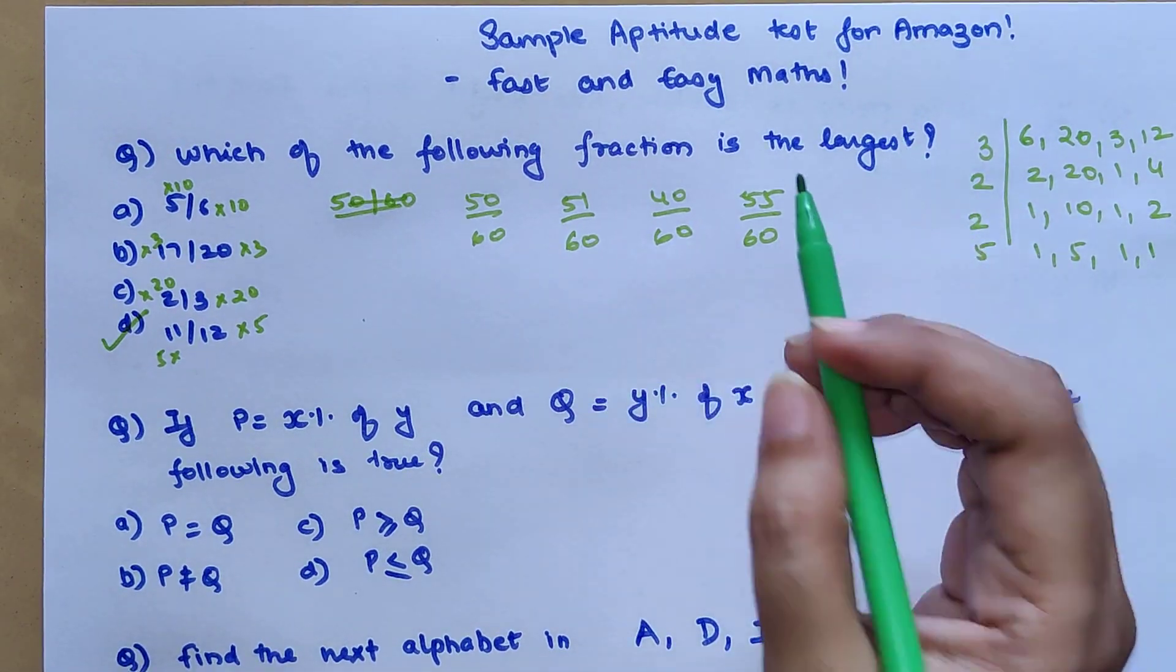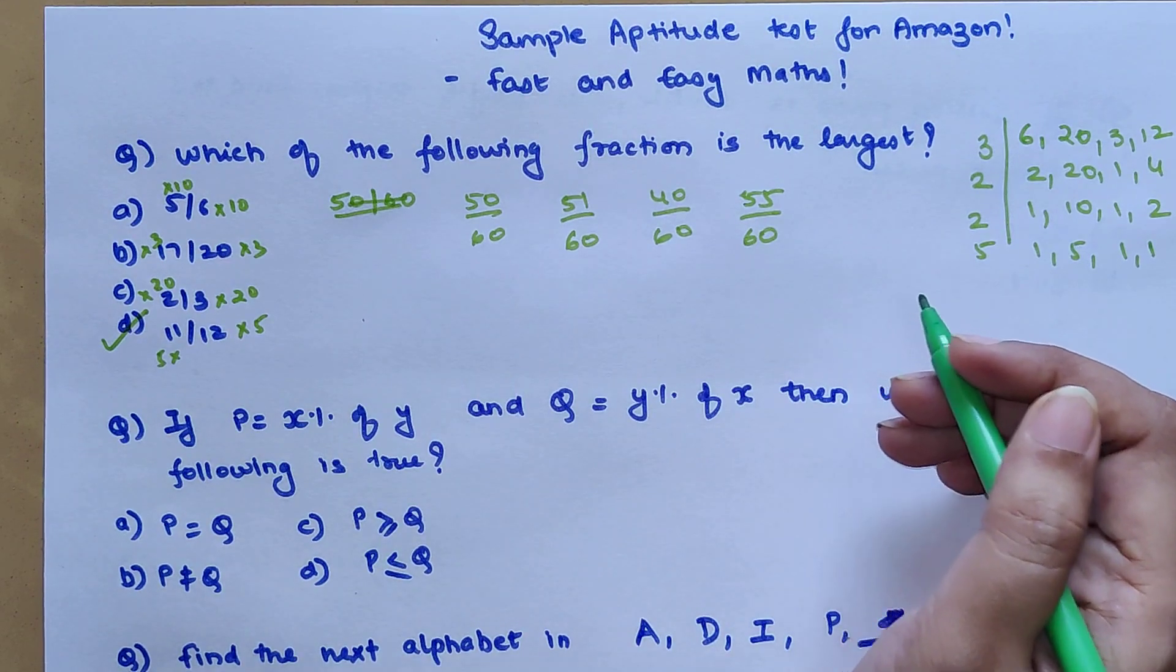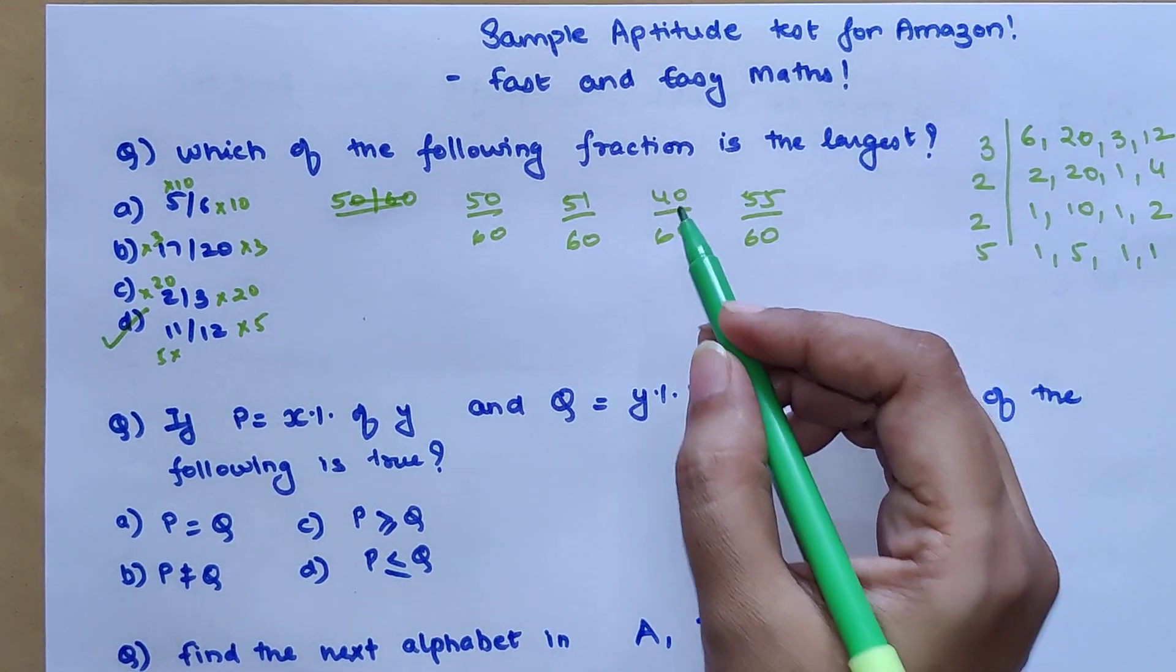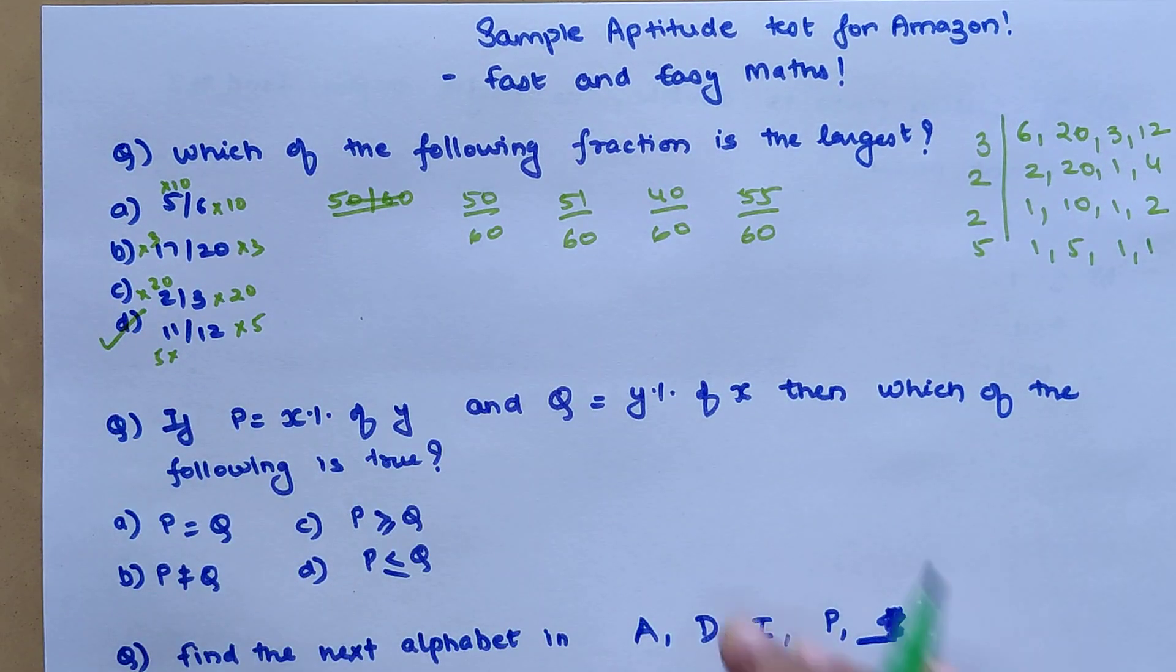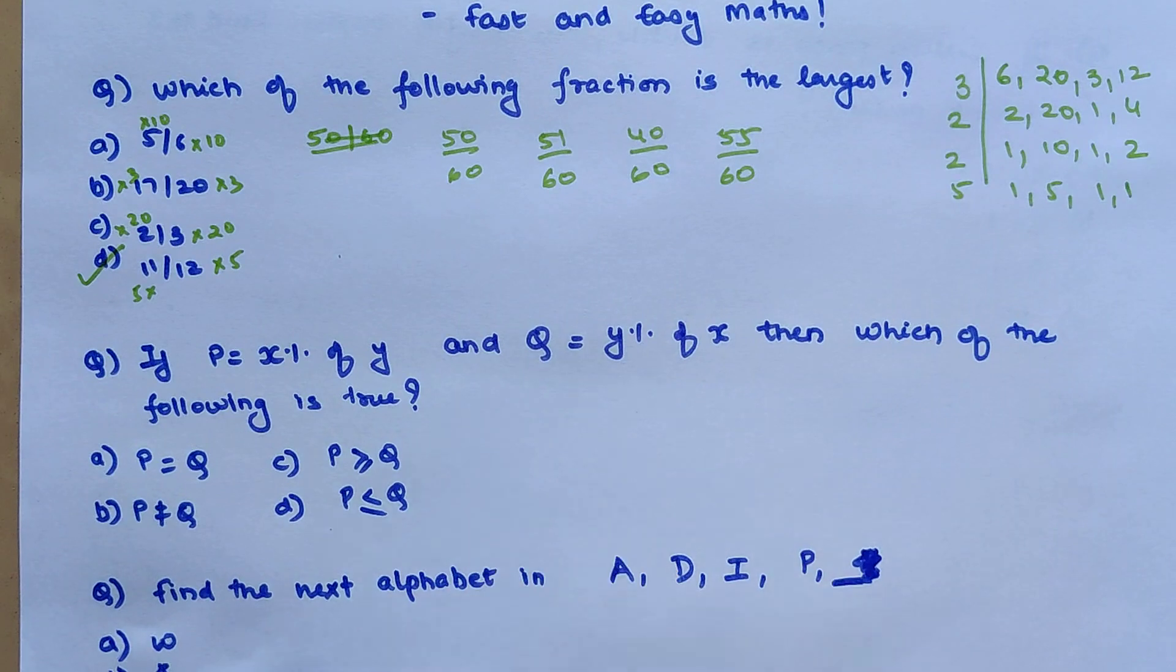The highest numerator will become your largest fraction. Similarly, if you wanted to find the smallest, the number which was the smallest in your numerator will become the smallest fraction.